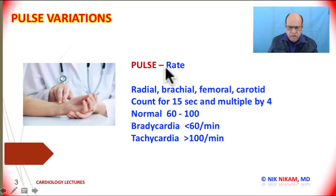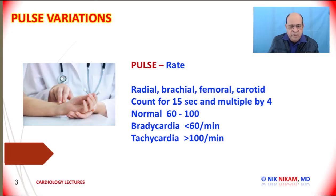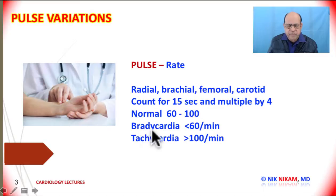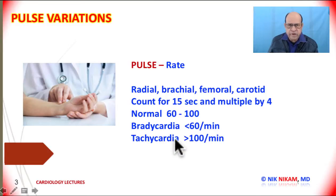To measure pulse rate, palpate the radial artery with your index and middle finger and count the number of pulses for 15 seconds, then multiply by 4 to get the rate per minute. Normal pulse rate is between 60 and 100 beats per minute. Below 60 is bradycardia; above 100 is tachycardia.